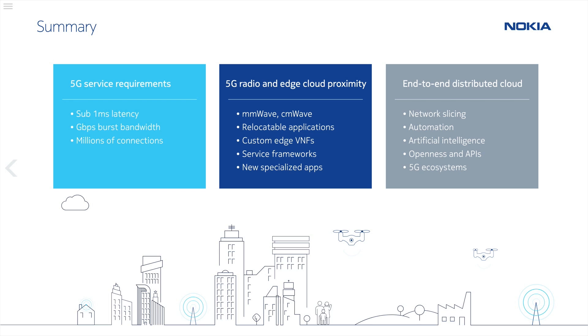All of this is really just a natural conclusion of what has to happen to take full advantage of 5G. 5G service requirements fall out of the new 5G capabilities and this pushes network functions to the edge. As a result, we naturally end up with an end-to-end distributed cloud. Nokia covers all of these bases with technology for every aspect of the distributed cloud, and we have customers today building these capabilities using fully cloud-native network deployment models.